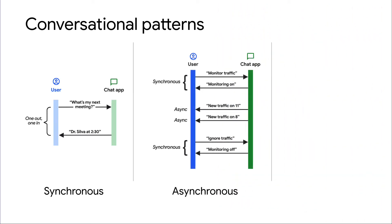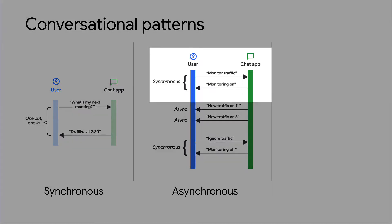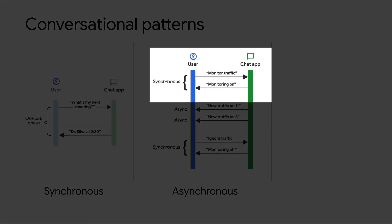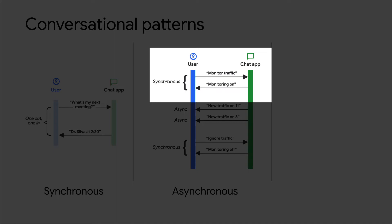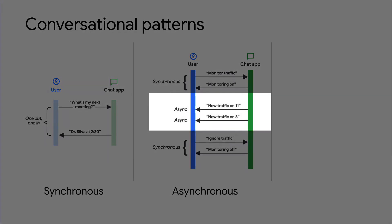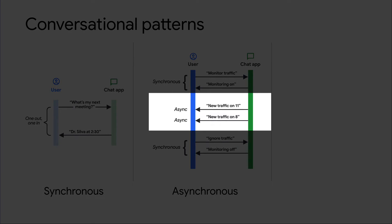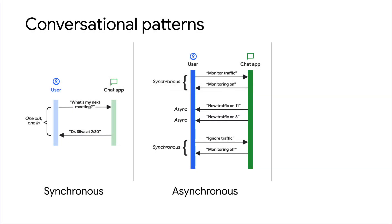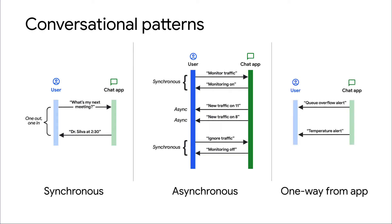An asynchronous conversational pattern is two-way communication between the user and the chat app, with the chat app sending any number of additional messages. For example, the user requests the chat app to start monitoring traffic on a network. The app sends an initial reply to acknowledge the request, then later sends one or more messages reporting on the traffic monitoring request. An alert chat app that sends messages to a chat space uses the one-way from app pattern.